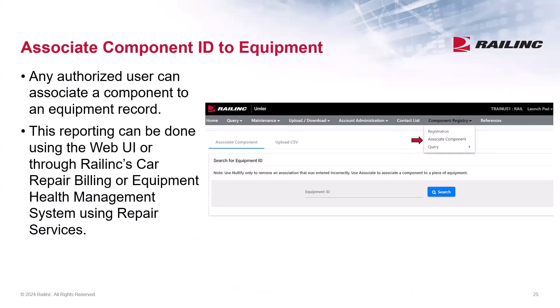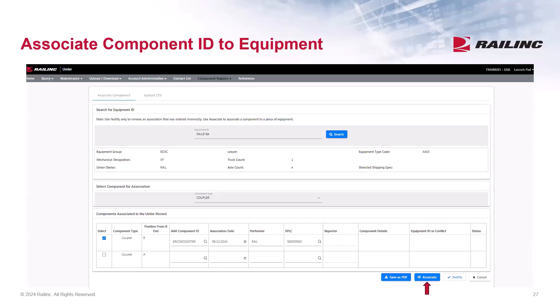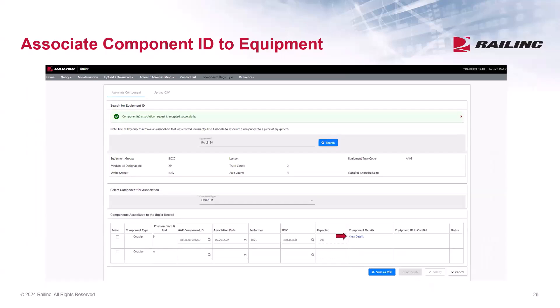There are multiple ways to associate a component ID to equipment. This reporting can be done using the web UI or through Railinc's car repair billing or equipment health management system using repair services. But from the main menu, you can select Component Registry and then select Associate Component. First, enter the Equipment ID and then select the Component Type. I've selected Coupler. Next, I entered the Coupler Component ID that I registered earlier, along with the Association Date, the Performer Mark or Company ID, and the split of the location where it's being applied. Then select Associate. If the component has no warnings, a confirmation message is displayed and the component is associated to the equipment.